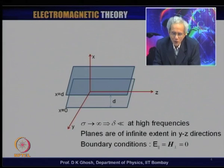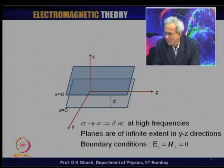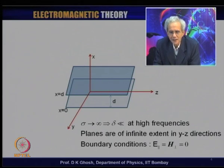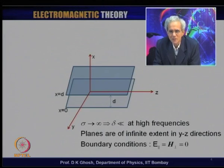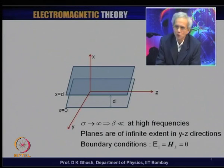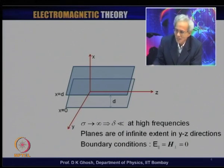Theoretically, or in practice, what we require is that the skin depth in the material should be much lower at very high frequencies. Notice that the planes are of infinite extent in the y-z direction. I need to specify the boundary conditions: the parallel component of the electric field and the normal component of the magnetic field must be zero on the metal plates. We will start with equations governing the six components and put in these boundary conditions as we go along.